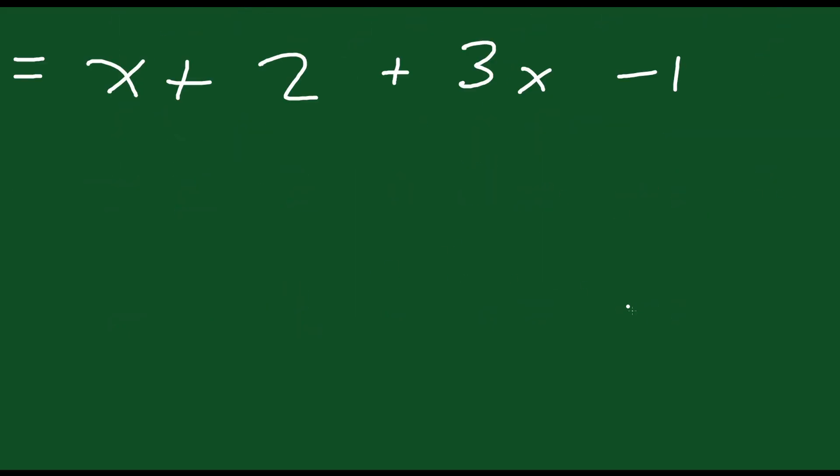And from here it's just a matter of collecting like terms like we've practiced before. You have x plus 3x that's going to be 4x. 2 minus 1 is going to be plus 1. And that's it. That's your answer.